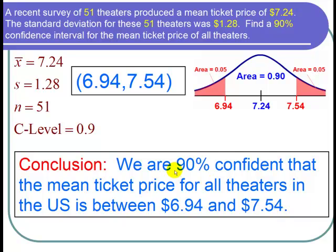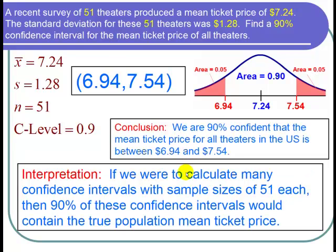So now let's look at this 90% which is a probability and let's interpret it. So we can say that if we were to calculate many confidence intervals, each with a sample size of 51, then we would get a separate confidence interval for each of these. And 90% of these confidence intervals would contain the true population mean ticket price. And then 10% would not contain the true population mean ticket price. And I'm done with the problem.